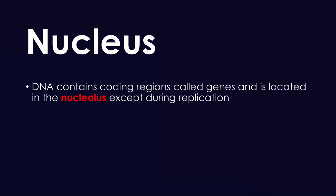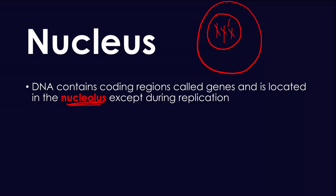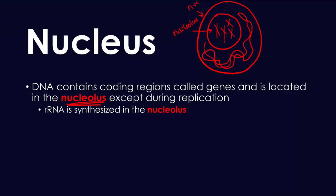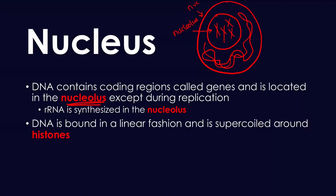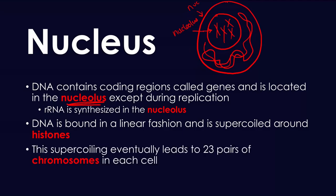DNA contains all the coding regions called genes, and it's located usually in the nucleus, except during replication. The nucleus is where all the condensed form of DNA usually is — the chromosomes. When DNA has to go through replication, obviously it can't be condensed, so it will be outside. Ribosomal RNA is also synthesized in the nucleus.